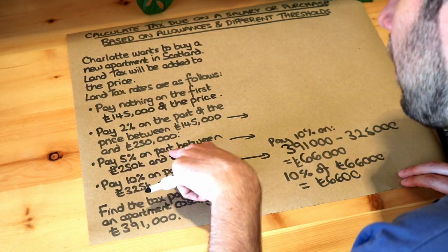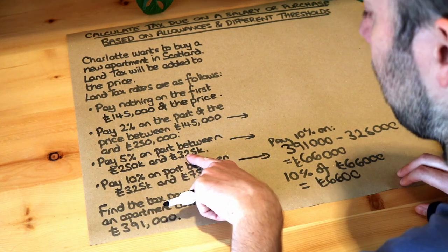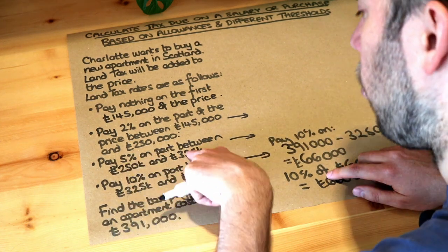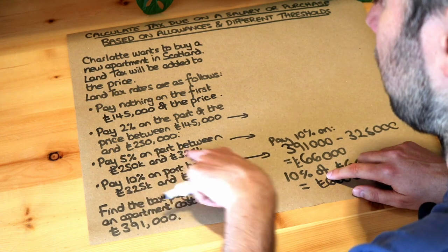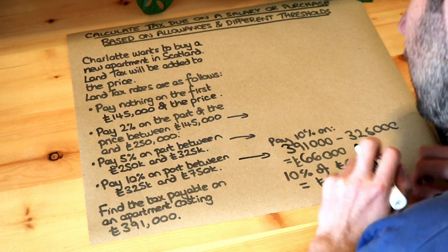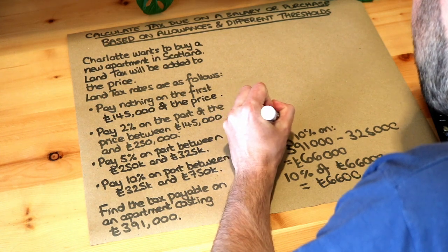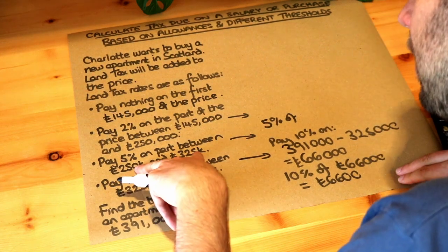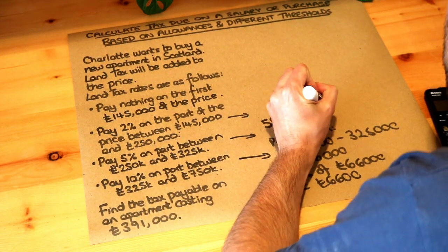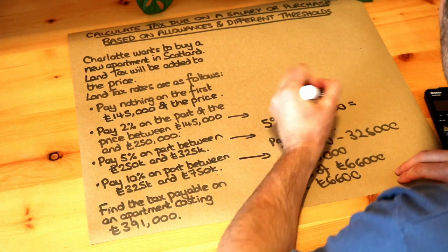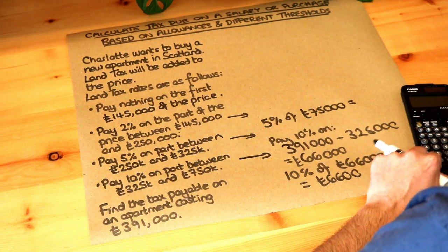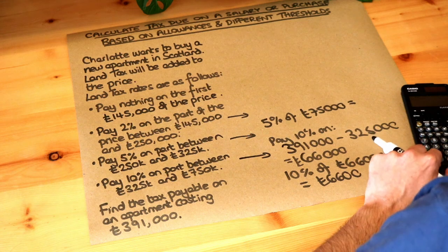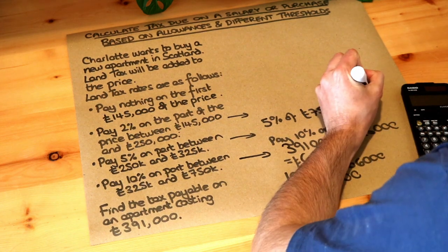We're paying 5% on the part of the cost between £250,000 and £325,000. Since the total cost is above £325,000, we're going to be paying 5% on all of that amount between £250,000 and £325,000. The difference between these two is £75,000. So we do 0.05 times £75,000, which gives us £3,750.